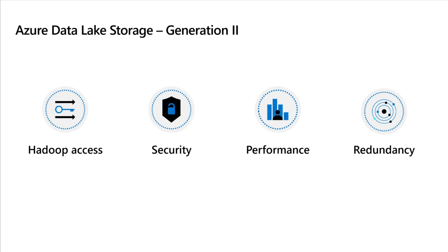In terms of security, Data Lake provides file-level and folder-level security, which is not available in a standard storage account. So in a large team, individuals can have different levels of access. For performance, you can load huge amounts of data from Data Lake, and it provides Spark optimizations, making it more performant than a normal storage account. For redundancy, you can have three, four, or six copies of your data, so if a server or disk node crashes, the data can be restored from the remaining copies.